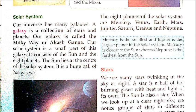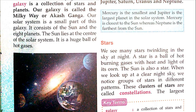Mercury is the smallest planet and Jupiter is the largest planet in the solar system. Mercury is the closest to the sun, whereas Neptune is the farthest from the sun.